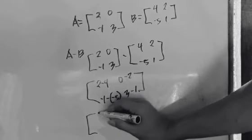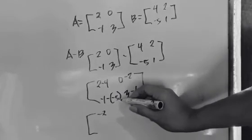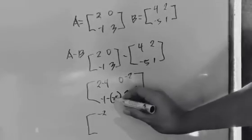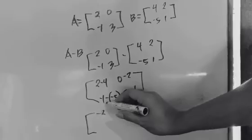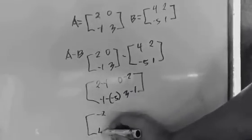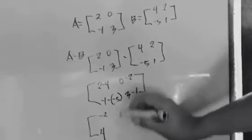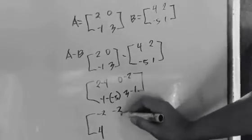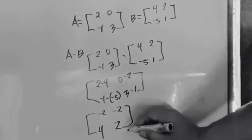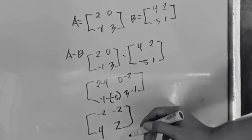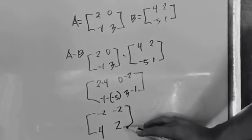So 2 minus 4 is equal to negative 2. Negative 1 minus negative 5: negative times negative is positive, so we add — negative 1 plus 5 is equal to 4. Then 0 minus 2 is equal to negative 2, and 3 minus 1 is equal to 2. So the value of matrix A minus matrix B is equal to [negative 2, 4, negative 2, 2].